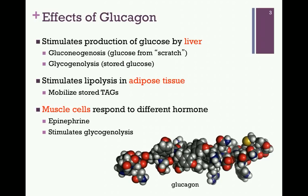Muscle cells respond to a different hormone. Epinephrine stimulates glycogenolysis in muscle cells — that's the release of glucose from stored glycogen. Recall that muscle cells do not have the capacity to carry out gluconeogenesis as the liver does.